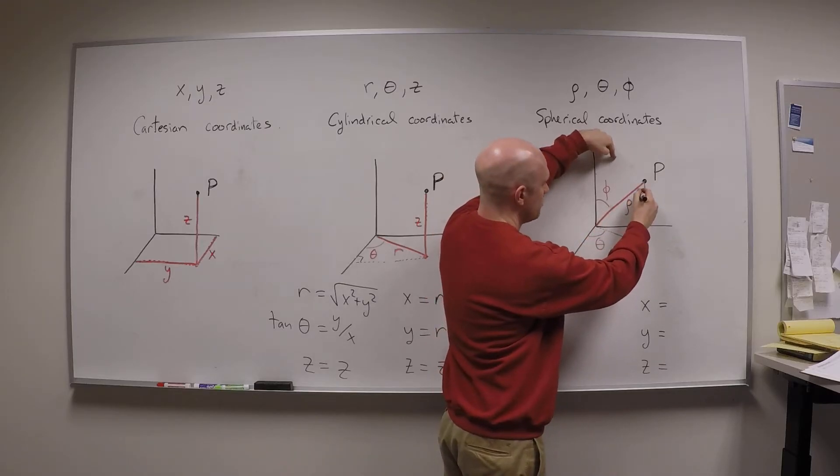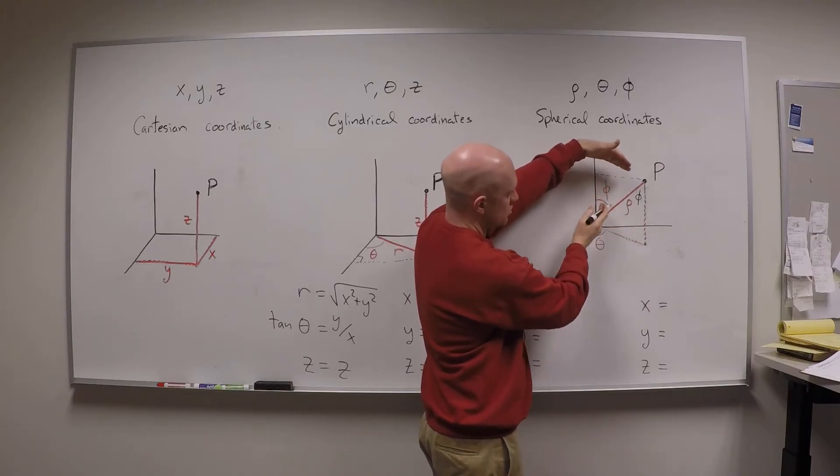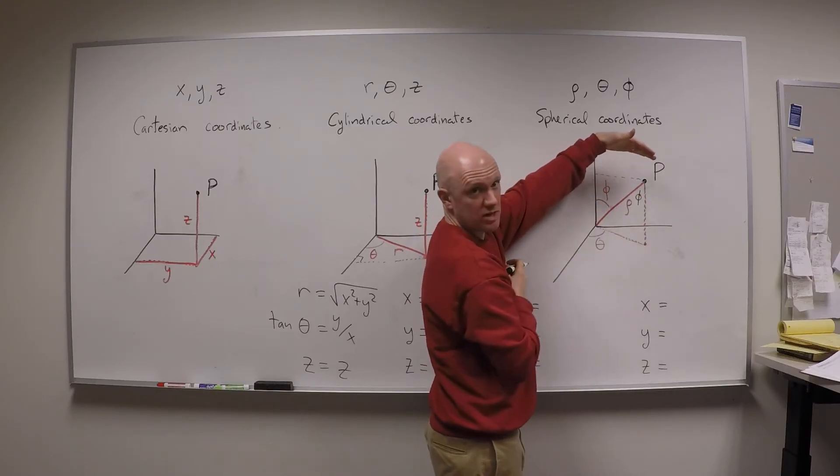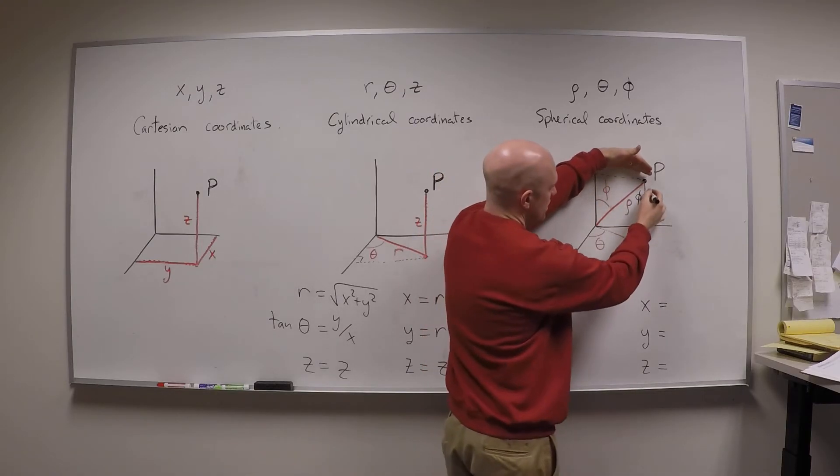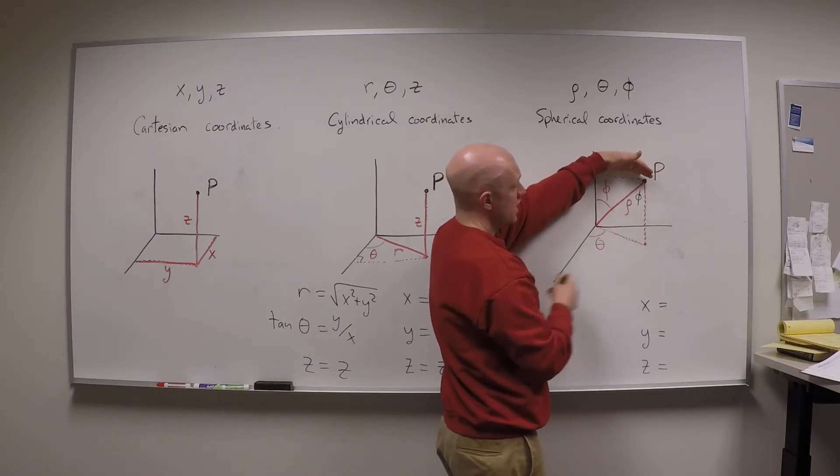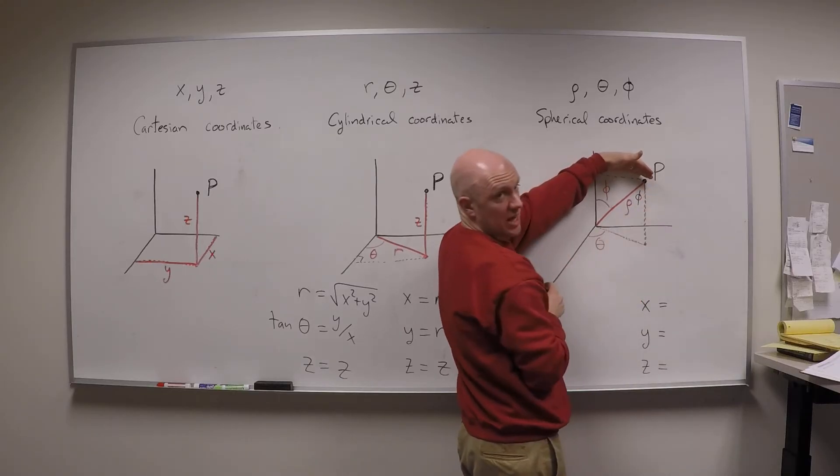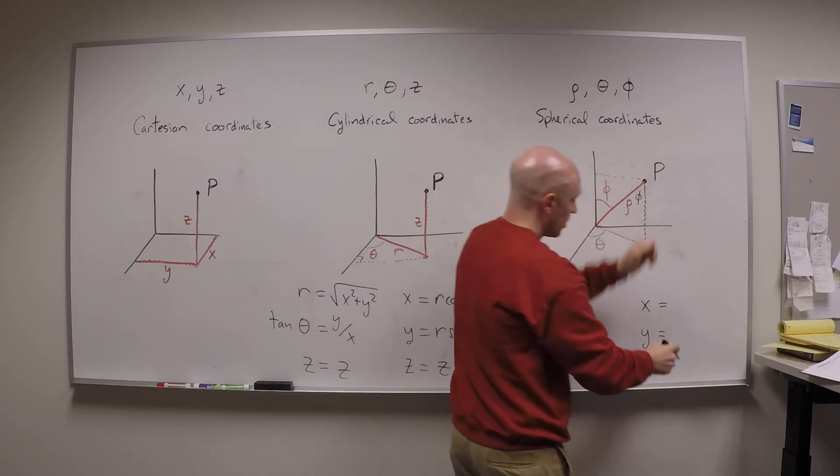So this guy right here, this is an angle of phi, I've got a hypotenuse which is rho, and that makes this one, this is the adjacent angle, so that makes this rho cosine phi.